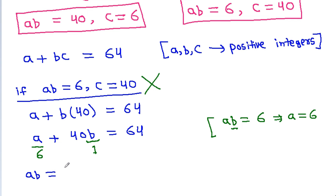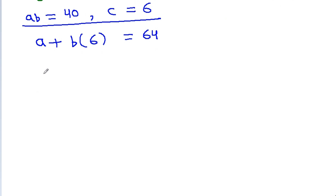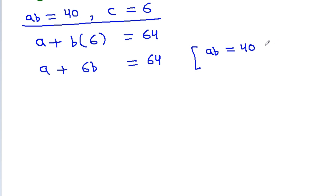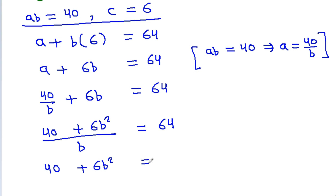So AB will be equal to 40 and C will be equal to 6. Substituting into A plus B times C equals 64 gives A plus 6B equals 64. Since AB equals 40, A equals 40 by B. So 40 by B plus 6B equals 64, which gives 40 plus 6B squared by B equals 64, and then 40 plus 6B squared equals 64B.